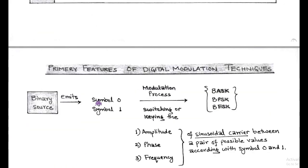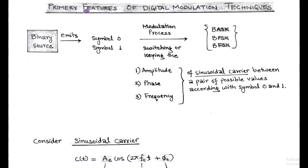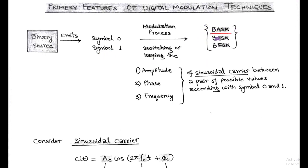Next, we discuss some basic features of digital modulation techniques. During the modulation process — also called switching or keying — the amplitude, phase, or frequency of the high-frequency sinusoidal carrier gets transformed into a pair of possible values corresponding to symbol 0 and symbol 1. Correspondingly, we have binary ASK, binary PSK, and binary FSK signals.